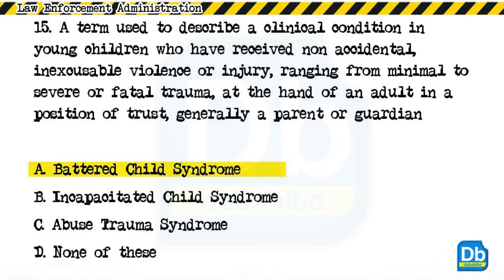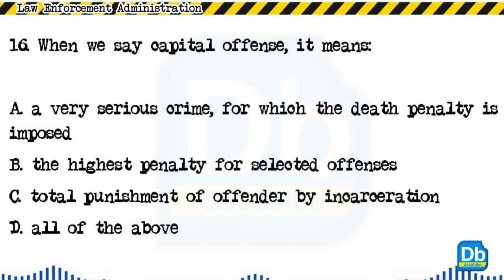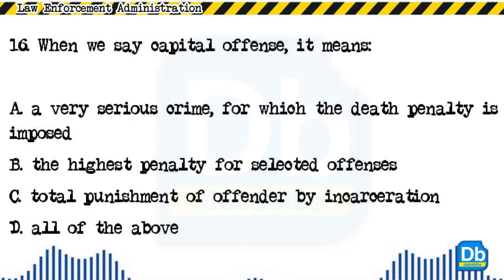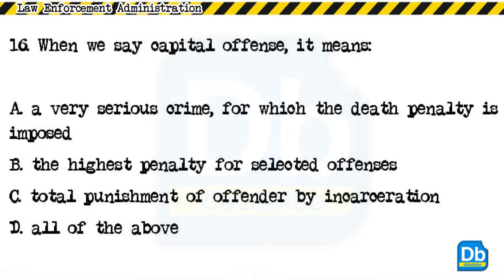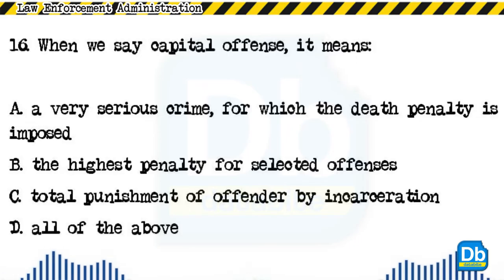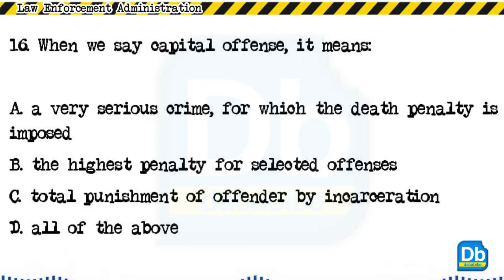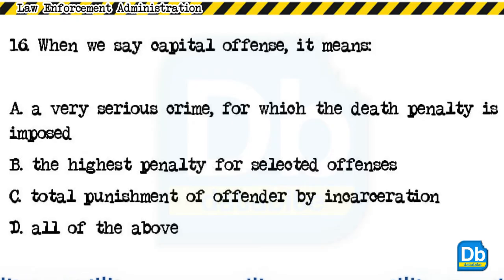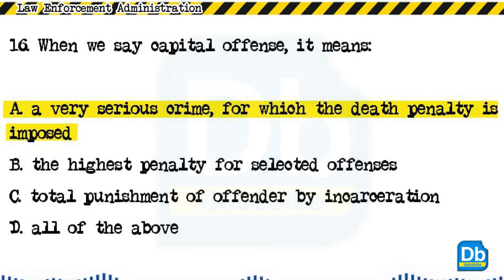The answer is A, battered child syndrome. Question 16: When we say capital offense, it means: a) a very serious crime for which the death penalty is imposed, b) the highest penalty for selected offenses, c) total punishment of offender by incarceration, d) all of the above. The answer is A, a very serious crime for which the death penalty is imposed.